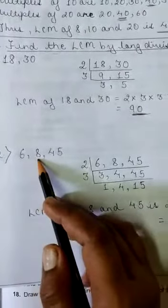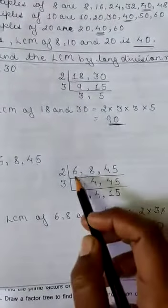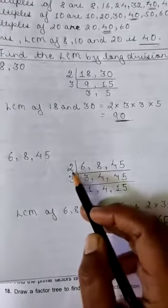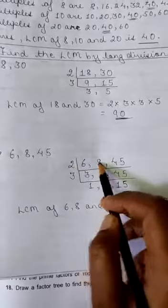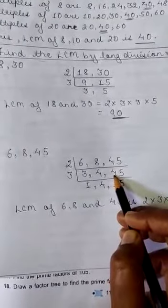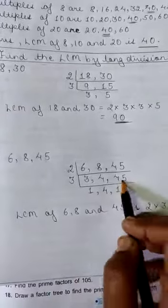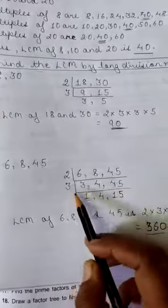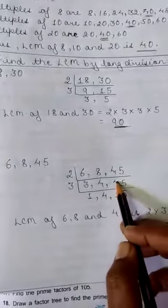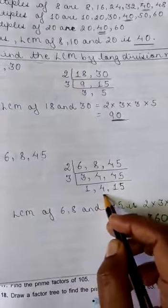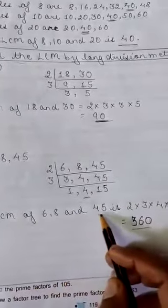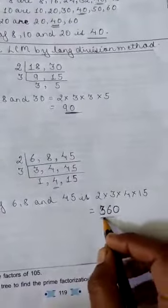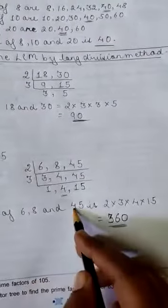Second question: 6, 8, and 45. Now here 3 digits are given. You can consider any 2 digits — suppose 6 and 8. Does it come in the table of 2? Yes. So 2 into 3 is 6, and 2 into 4 is 8. 45 you will write in the same manner. Then see here 3, 4, and 45. Now 3 and 45 come in the multiplication table of 3, so 3 into 1 is 3 and 3 into 15 is 45. 4 will be written as usual. Then LCM of 6, 8, and 45 is 2 × 3 × 4 × 15. When we multiply we get 360. So the Least Common Multiple of 6, 8, and 45 is 360.